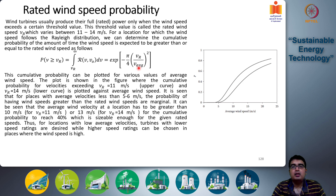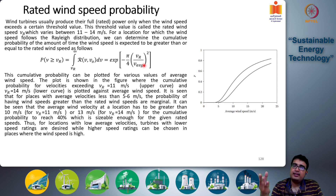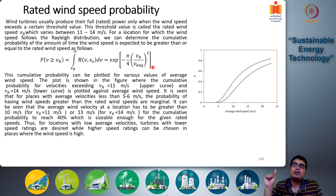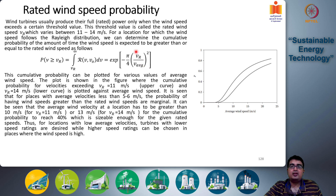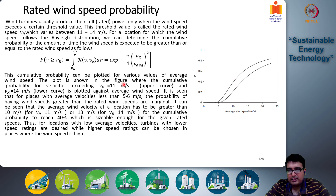We can now plot this probability value with respect to the average wind velocity for that location. For a given rated velocity and a given average velocity, the probability is evaluated from this expression. If the average velocity changes while the rated velocity is kept constant — that is, we are looking at different locations with different average velocities — then the probability values also change. These two plots show the cumulative probability for two cases: the upper curve is for a rated speed of 11 m/s and the lower curve is for a rated speed of 14 m/s.